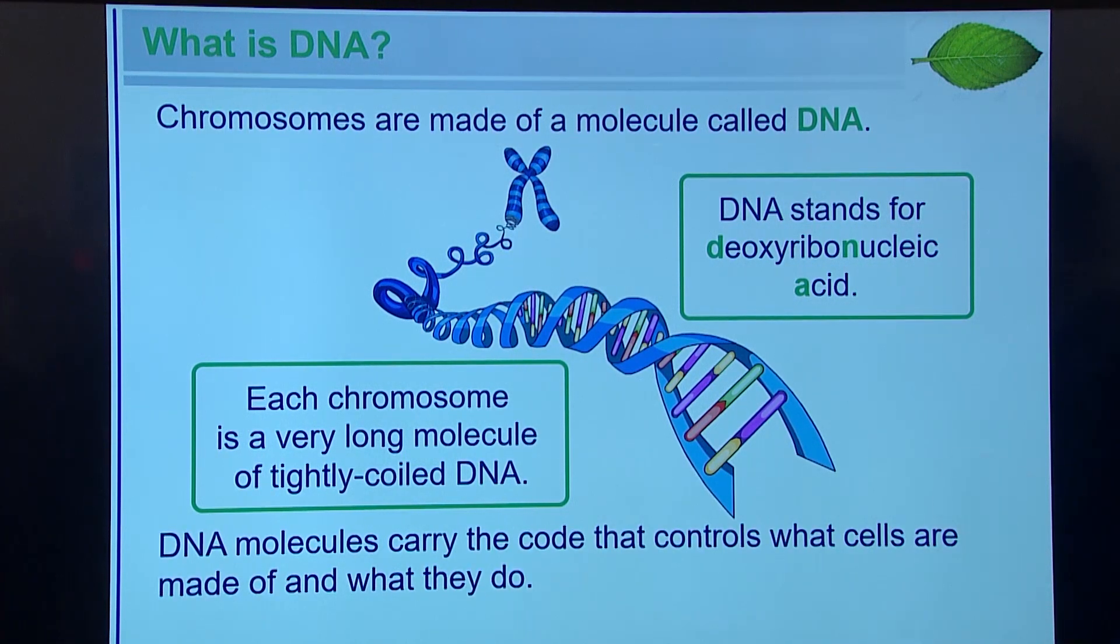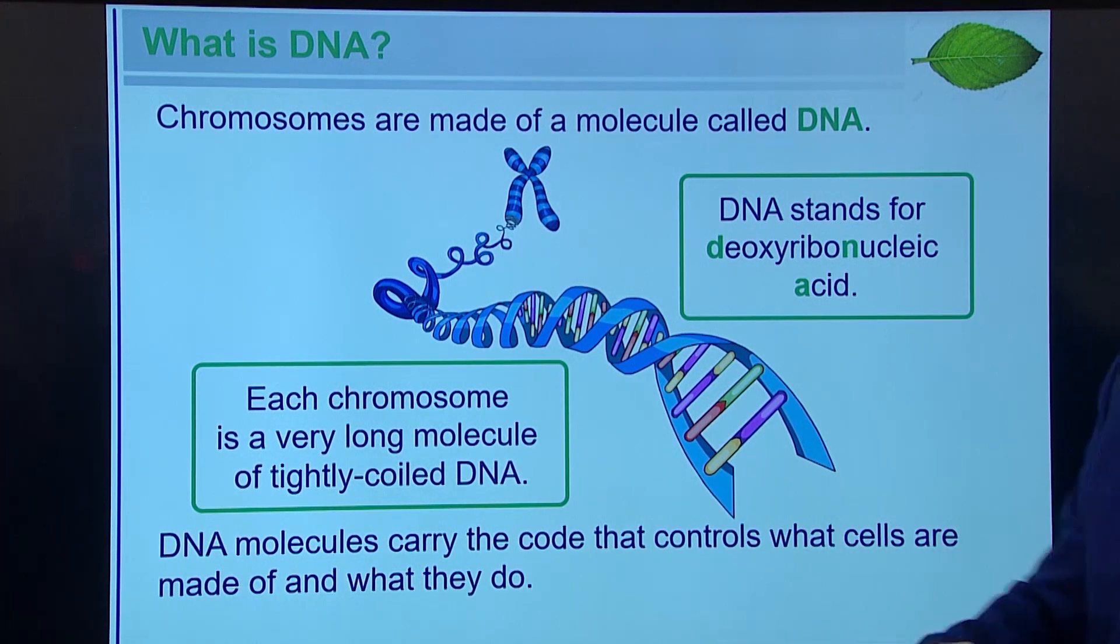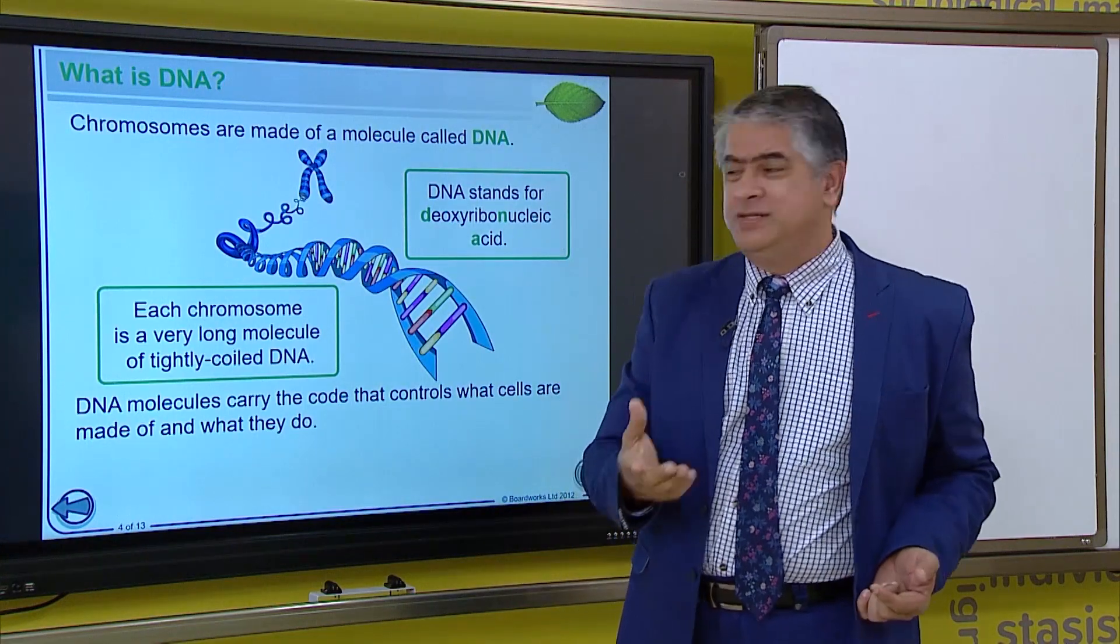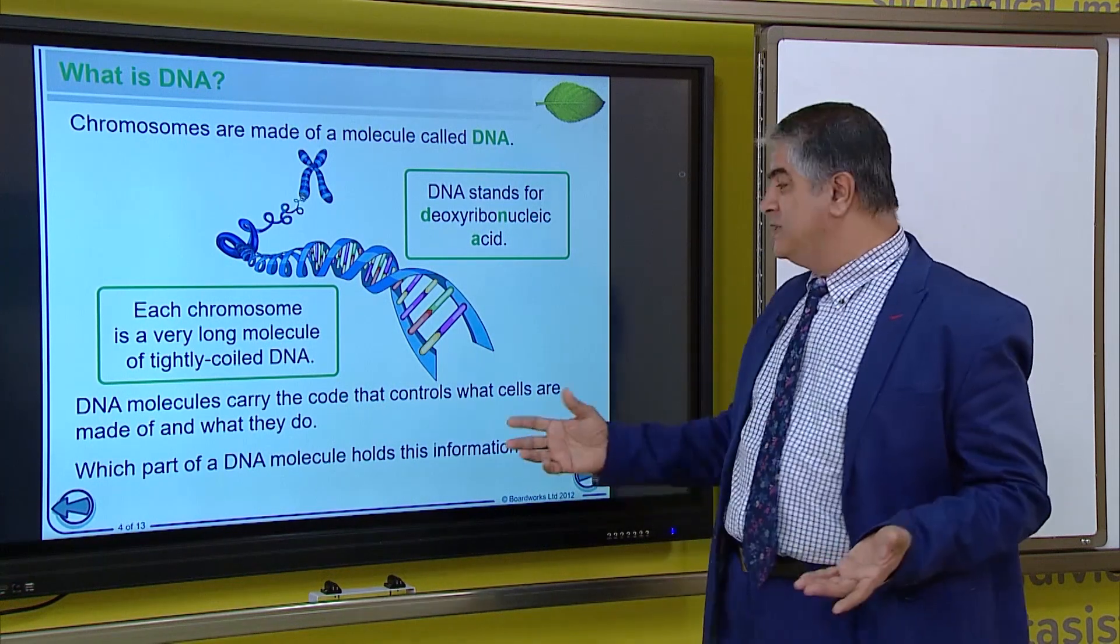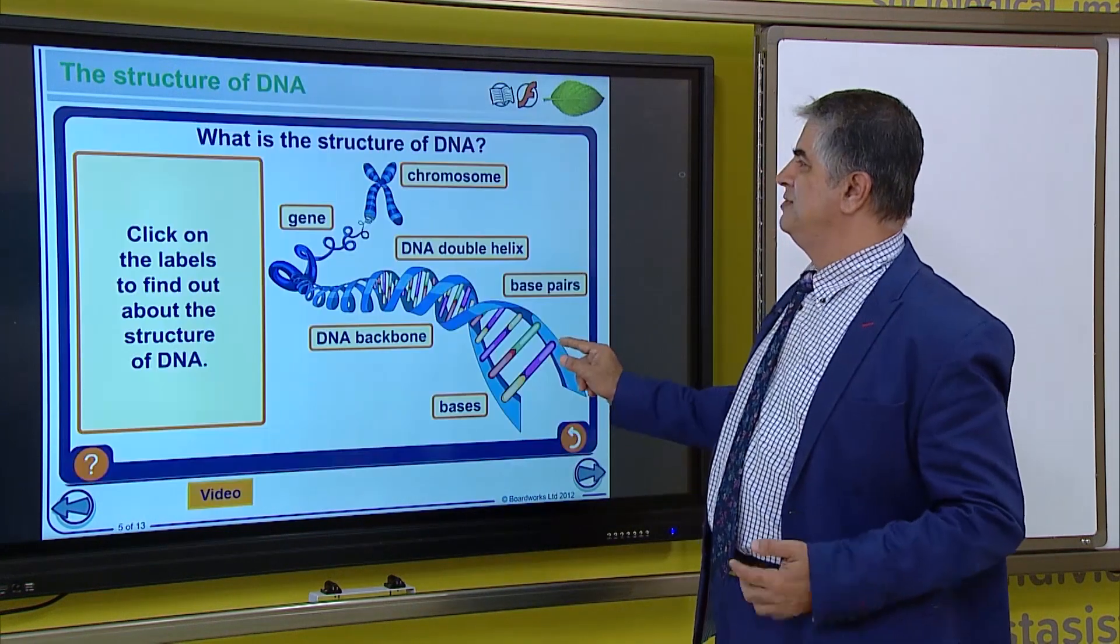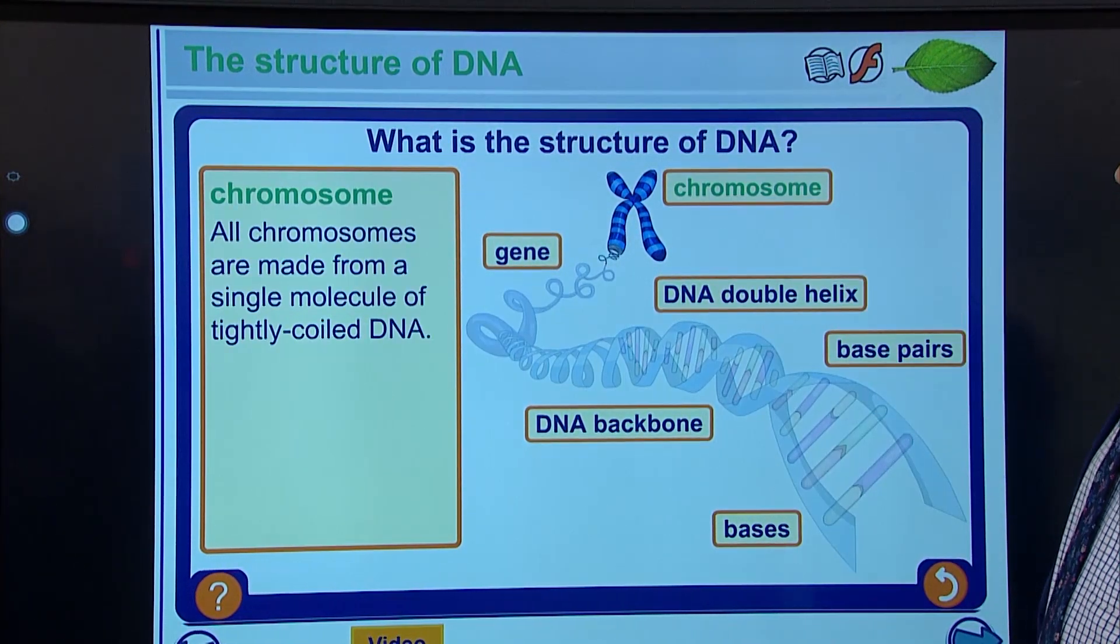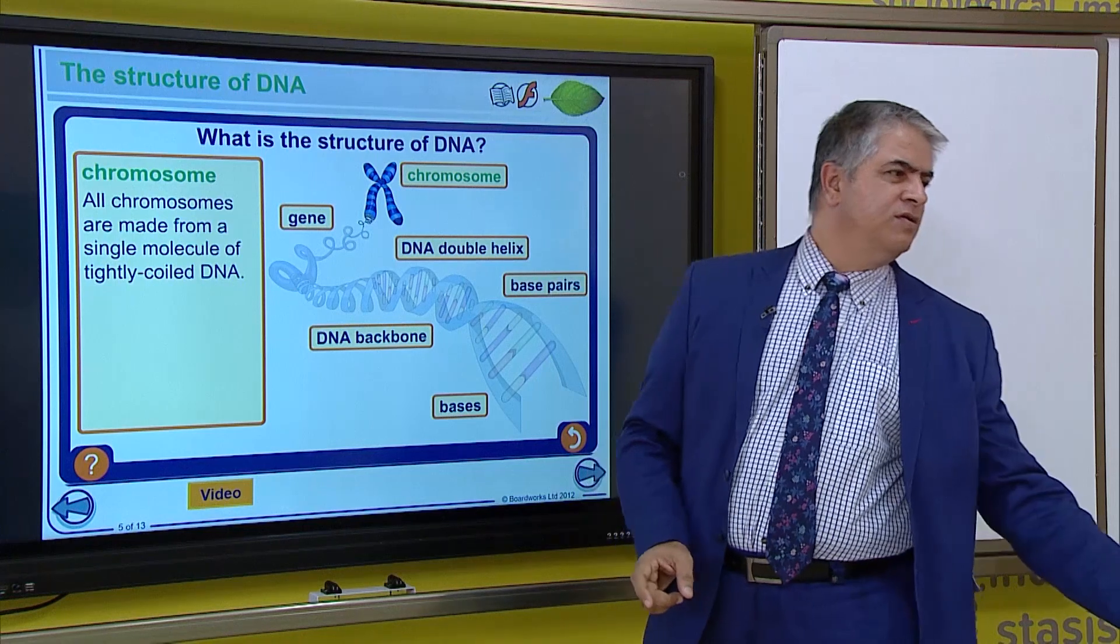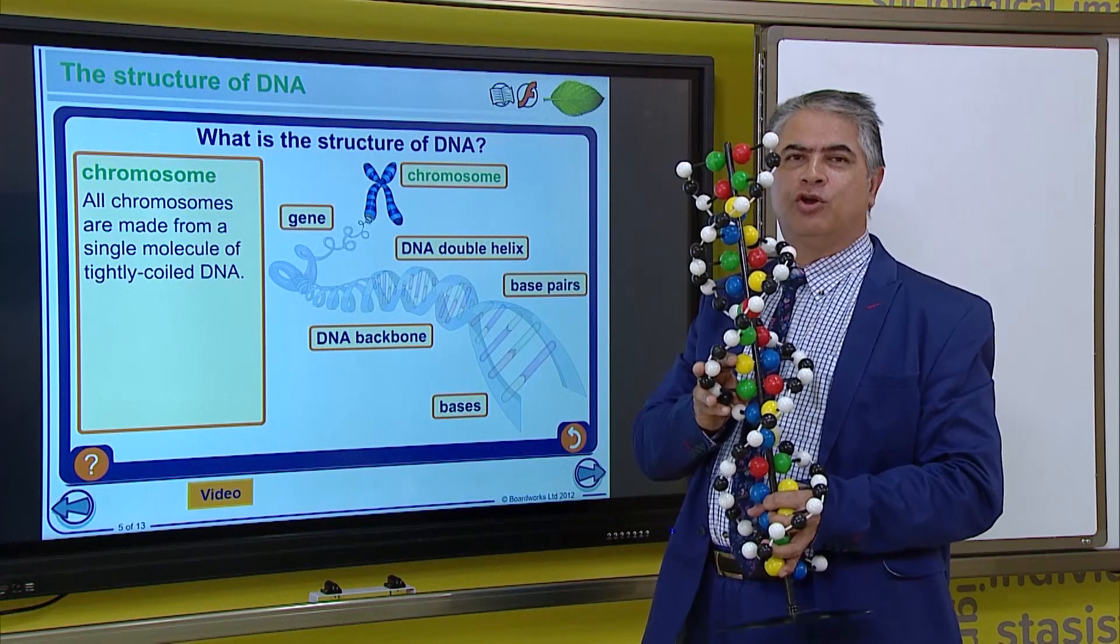Now, the question comes about is that DNA carries the code that controls the entire cell. And we want to know, how does it do it? Which part of the DNA molecule contains the information that controls the cell? Now, let's look at the structure of the DNA. The DNA is made up of a single molecule. The chromosome is made up of a single molecule of DNA.